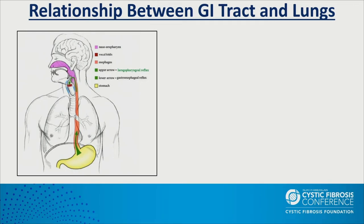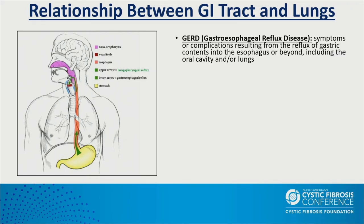First, regarding anatomy: the lungs are very closely associated with the GI tract. Your throat is one tube in the back of your mouth, and as it goes into your neck, it branches into the esophagus and the airway. A few key terms: gastroesophageal reflux disease refers to symptoms or complications of gastric materials coming up the esophagus. Most of the data we have on reflux in CF is really based on GERD, not necessarily on its impact on the lungs.